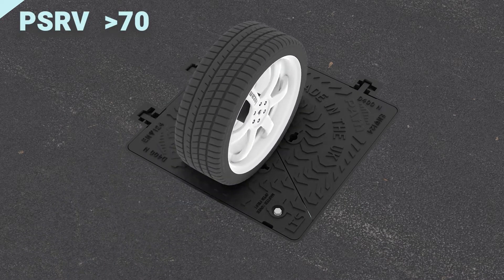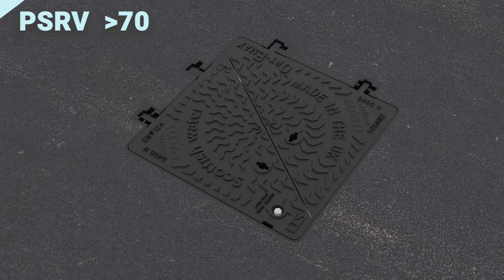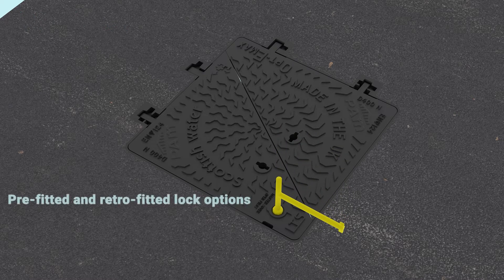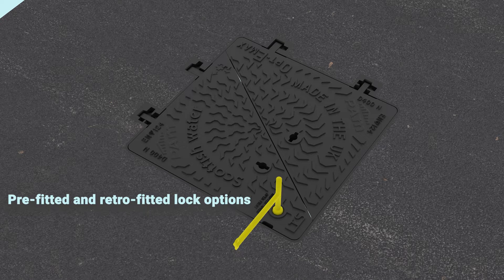OptiMax also features our radial raised checker design, which has been independently tested and verified to provide a PSRV of over 70. Locking can be fitted retrospectively with a wide choice of options or can be adapted to customer requirements.